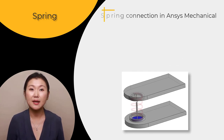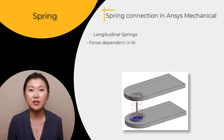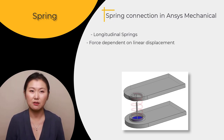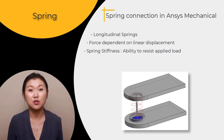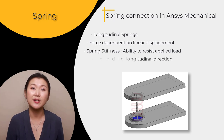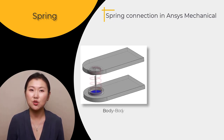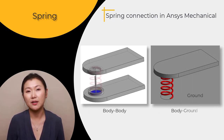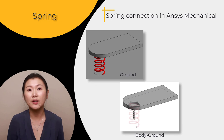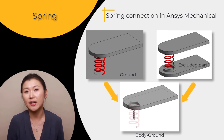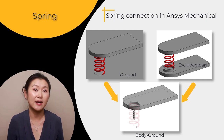In ANSYS Mechanical, springs can be defined as longitudinal springs that generate a force dependent on linear displacement. One important property of a spring is its stiffness — the ability of a spring to resist the applied load. For longitudinal springs, stiffness is defined in one direction, namely the longitudinal direction. A spring connection can be used to connect two bodies together or to connect a body to ground. The body-to-ground connection can represent a part with the ground, or a part not included in the analysis that still represents the other end of the spring.